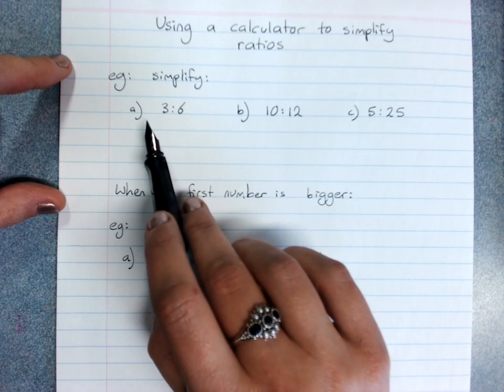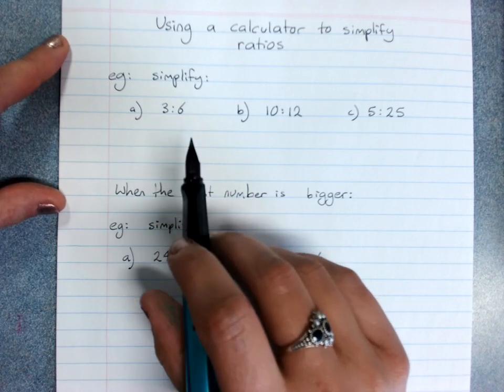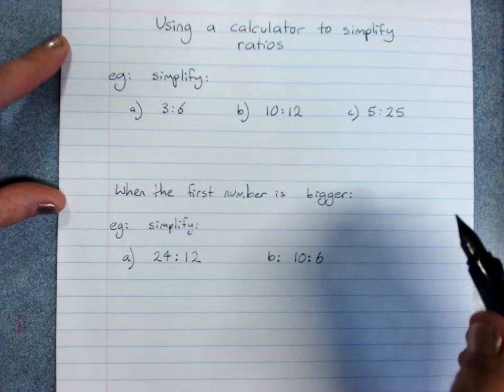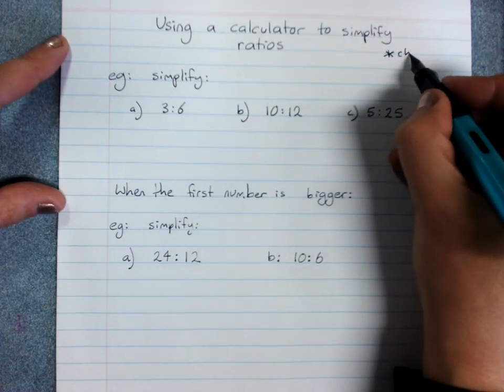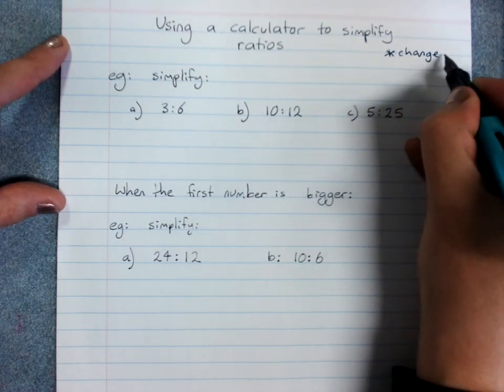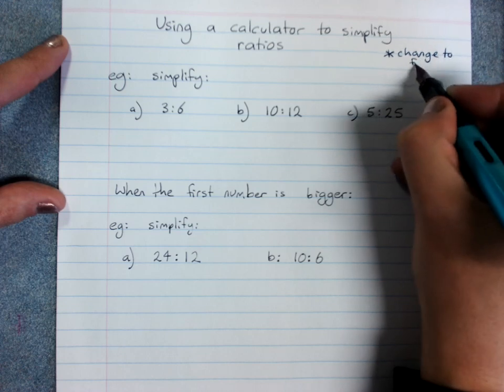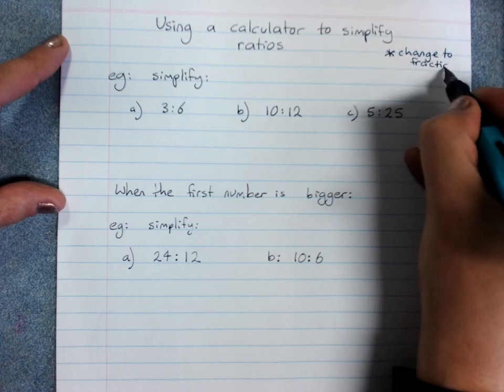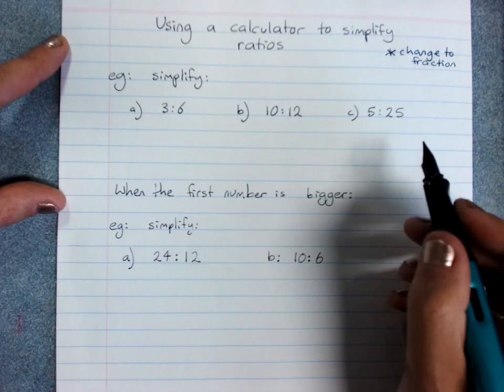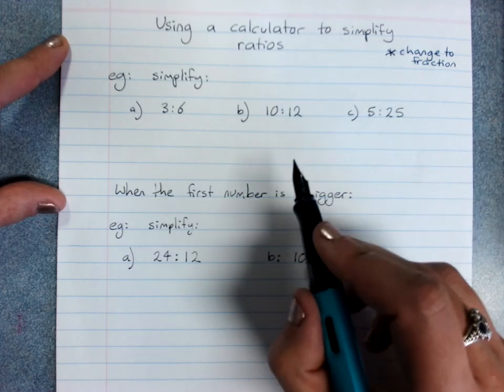If you're happier using a calculator then your method is change your ratio to a fraction, simplify it, and then change it back to a ratio.